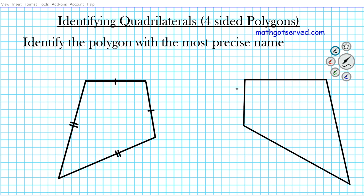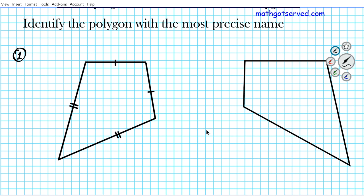Now let's take a look at some examples. The instructions are to identify the polygon with the most precise name. Polygon number one — what kind of quadrilateral is this? This is clearly a kite. It has two distinct pairs of congruent adjacent sides, so this is a kite.